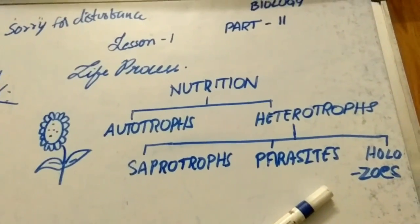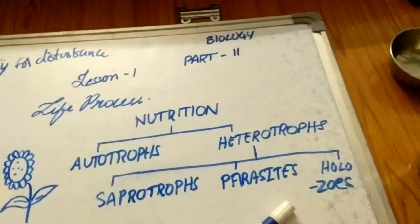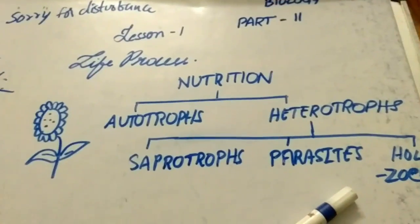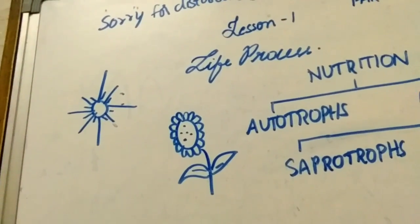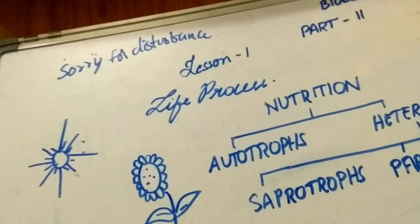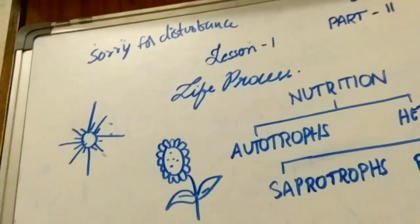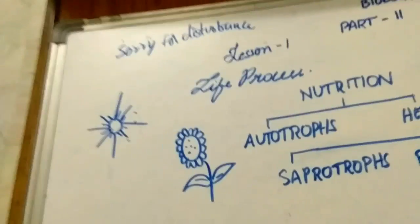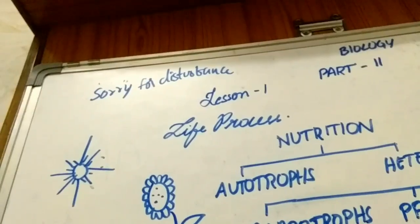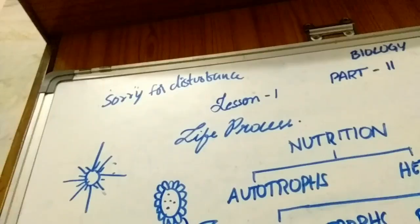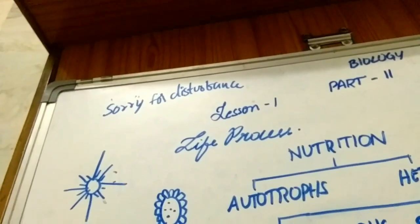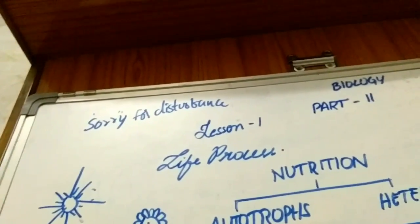Holozoic nutrition is that nutrition in which an organism takes complex organic food material into its body by the process of ingestion. The ingested food is digested and then absorbed into the body cells of the organism. The undigested and unabsorbed part of food is thrown out of the body by the process of egestion. Human beings and most animals — man, cat, dog, cattle, deer, tiger, lion, bear, giraffe, frog, fish, and amoeba — have a holozoic mode of nutrition.